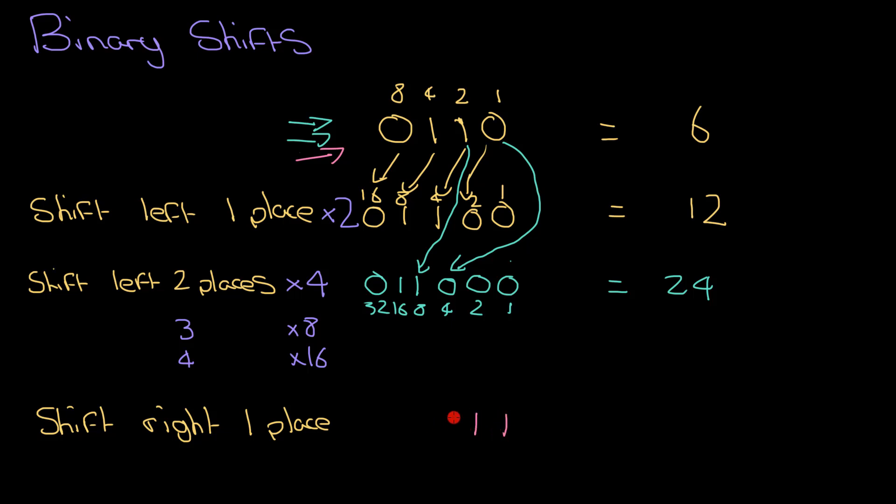I'm going to shift that right one place. And look what happens. I've got 1, 1, 0 now. Okay, so 1, 2, 4. So I had 6 originally. Shifting right one place, it's given us 3.